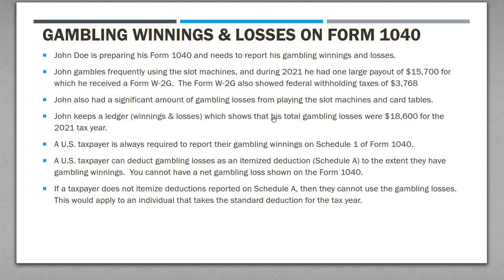If you gamble regularly, you report all your gambling winnings, but you can also report gambling losses to the extent of your winnings. You can never report more losses than you have winnings — you can't take a net gambling loss. However, a unique nuance is that for individual taxpayers you can only report those losses if you itemize deductions.